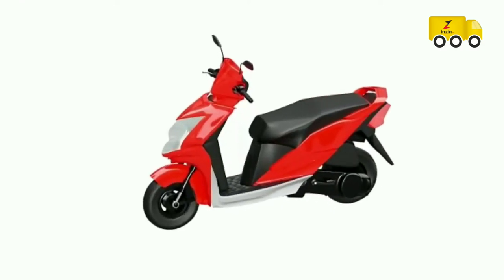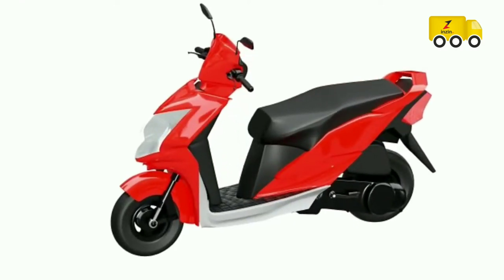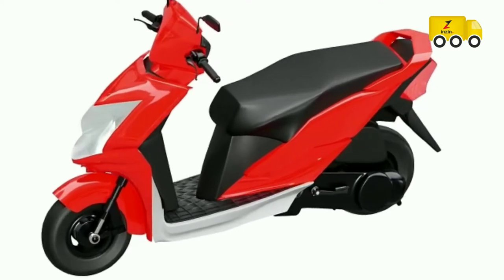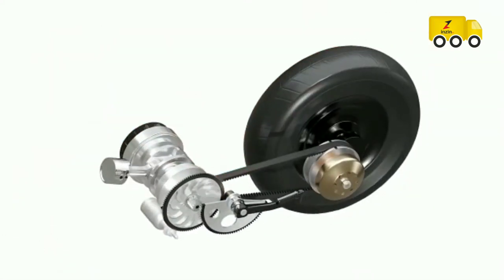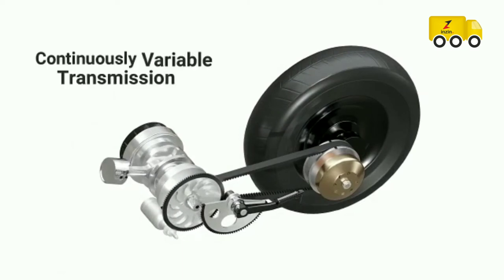Gearless scooter is one of the most common two-wheelers popular in many parts of the world. They are typically equipped with an automatic transmission system. This transmission system is known as Continuously Variable Transmission, or CVT.